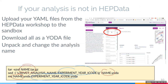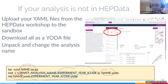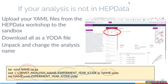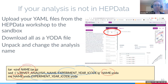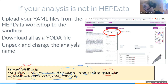Wei Zhuang: when running 'rivet-mkanalysis', how do you know if it succeeded? It will make three or four files depending on whether your analysis is in HEPdata. If you got a .cc file, an .info file, a .plot file, and a YODA file, it worked. The error 'cannot use a string pattern on a bytes object' is a Python version issue, but if files were created, you're probably okay.